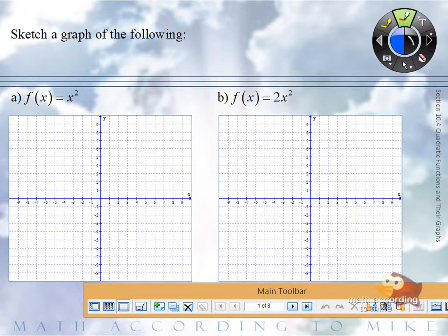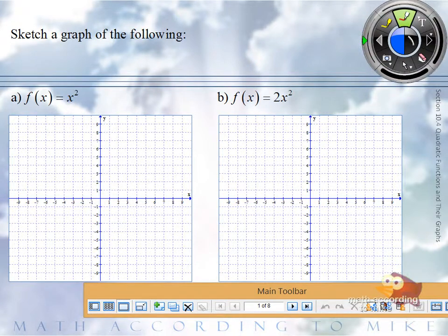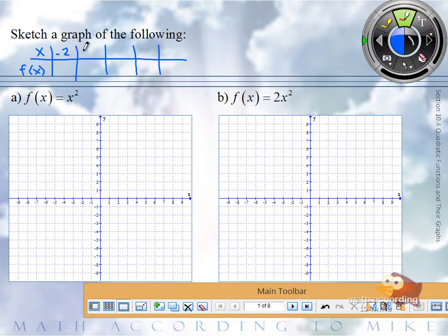So what we could do, if you wanted to for part A and only for part A, is we can make a little xy chart. Then we can pick our standard numbers, negative 2 up to positive 2.